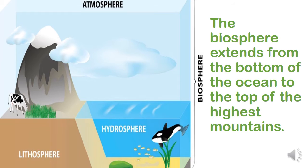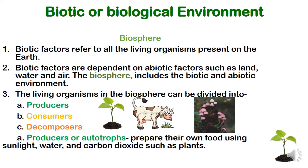Atmosphere — the air with gases, dust, and vapors. Hydrosphere — all water in whatever form. Lithosphere — land both in ocean and on continents. Biosphere — the life formed from all of these combined. Biotic factors refer to all living organisms present on earth. Biotic factors are dependent on abiotic factors such as land, water, and air. The biosphere includes both the biotic and abiotic environment.